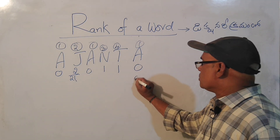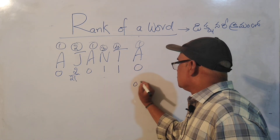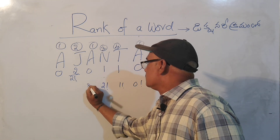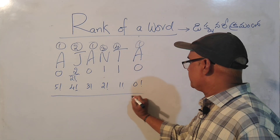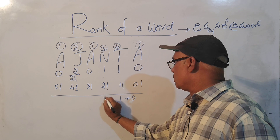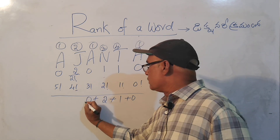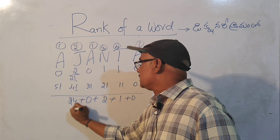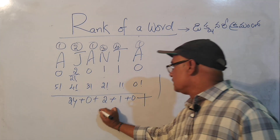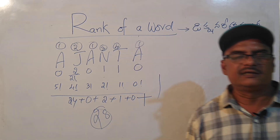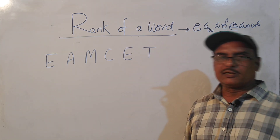So this is 0 factorial, 1 factorial, 2 factorial — 0 factorial, 1 factorial, 2 factorial, 3 factorial, 4 factorial, 5 factorial — 2 factorial, 2 factorial, 4 factorial — and so on up to 4 factorial repeated.